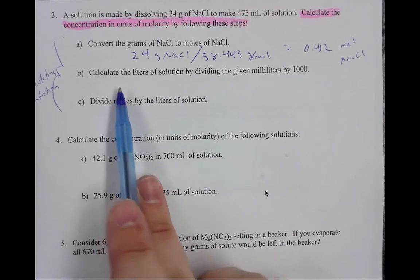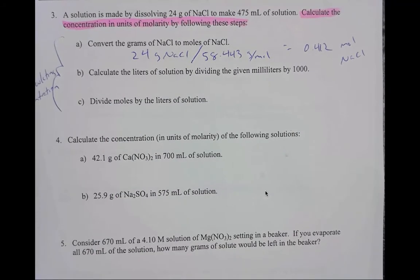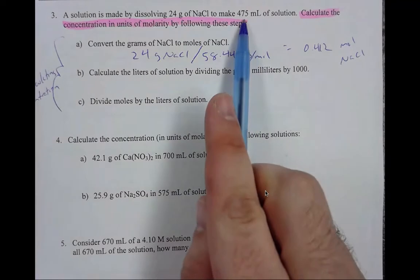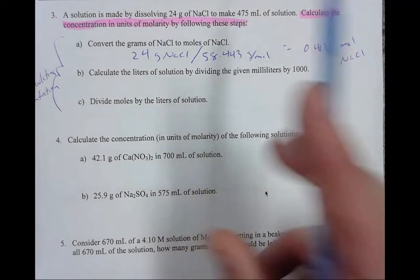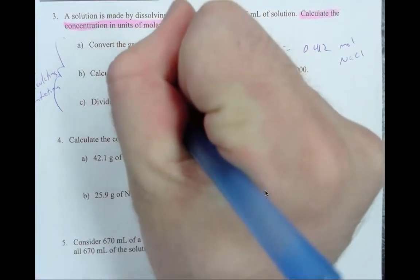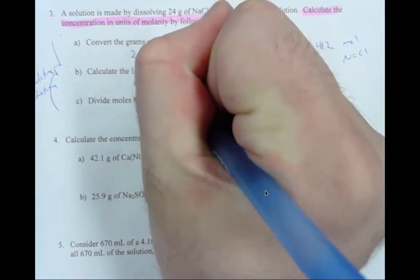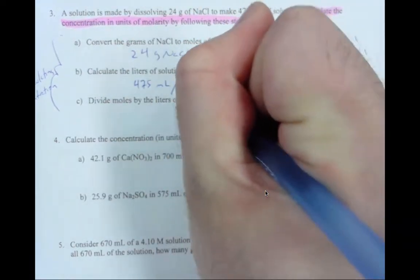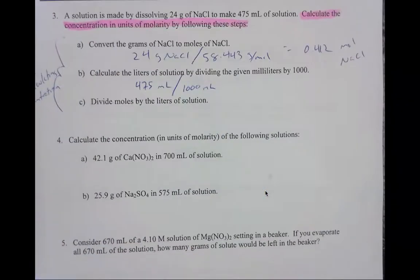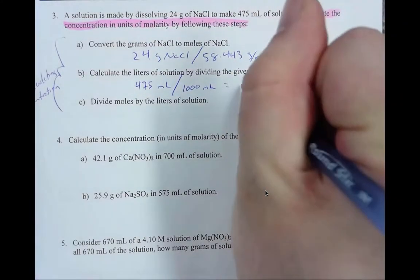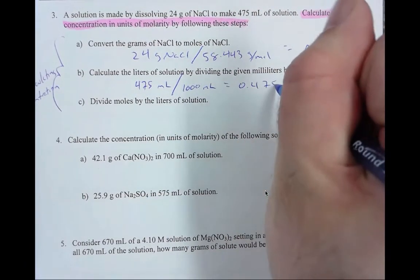Next we're looking at part B. Part B tells us to calculate liters. So we know we have 475 milliliters. To go from milliliters to liters, you simply divide by 1,000. That would give you 0.475 liters.